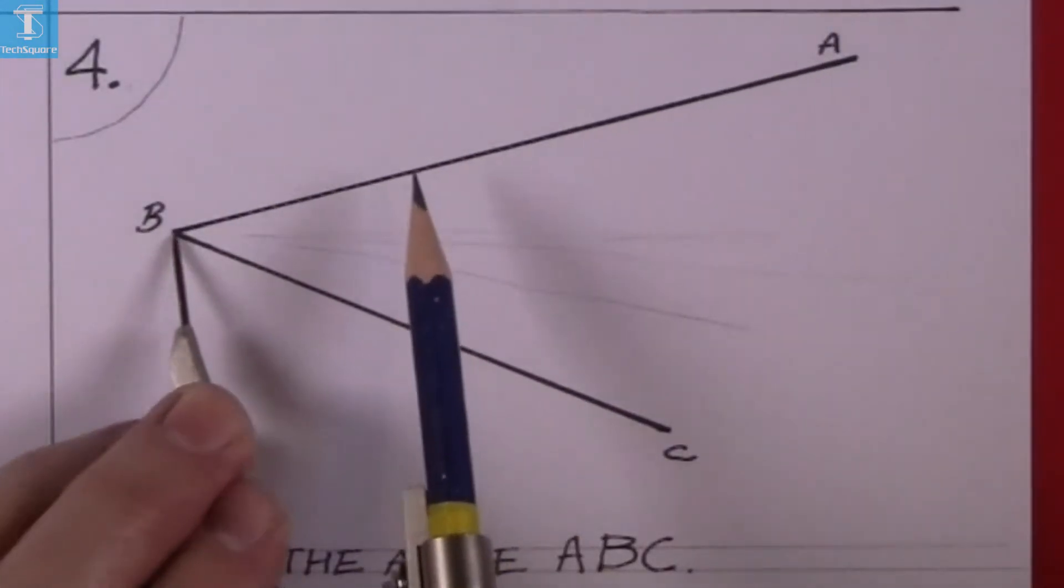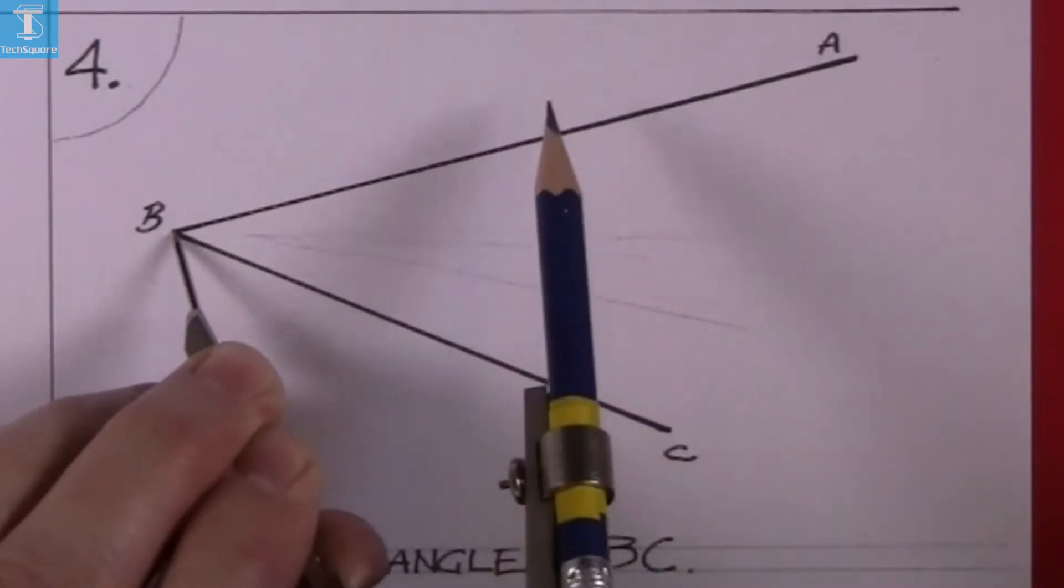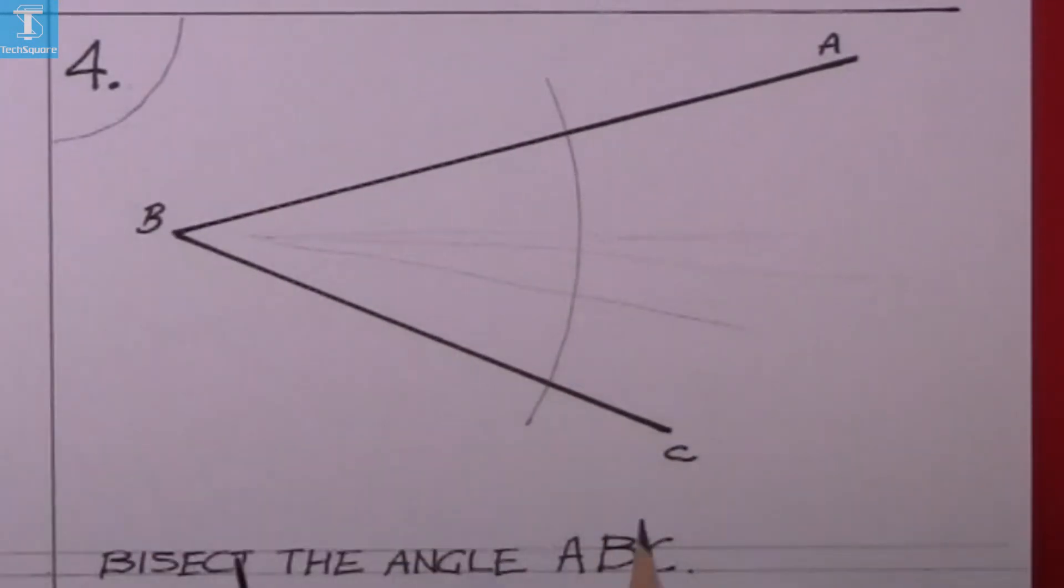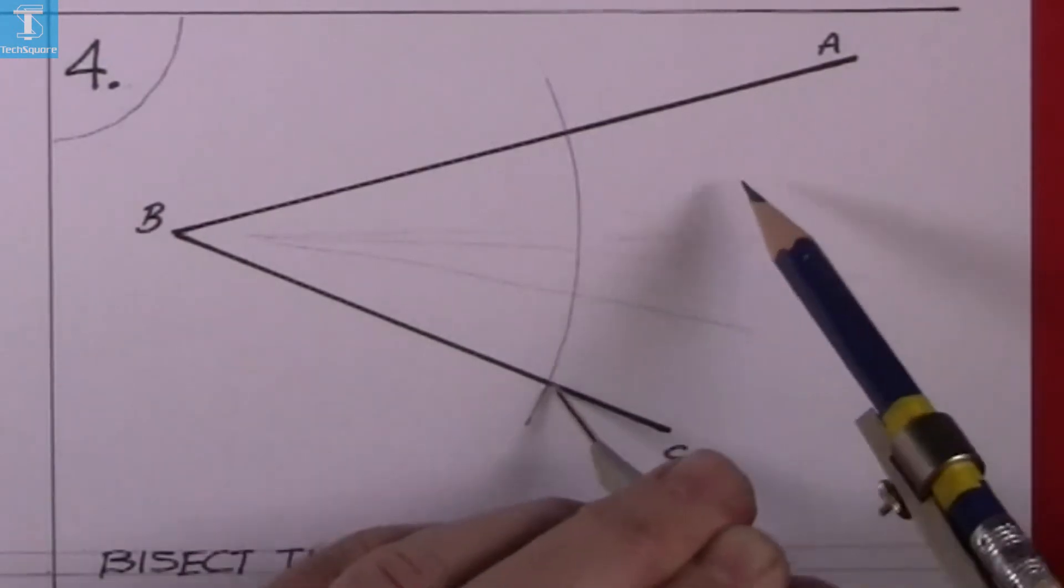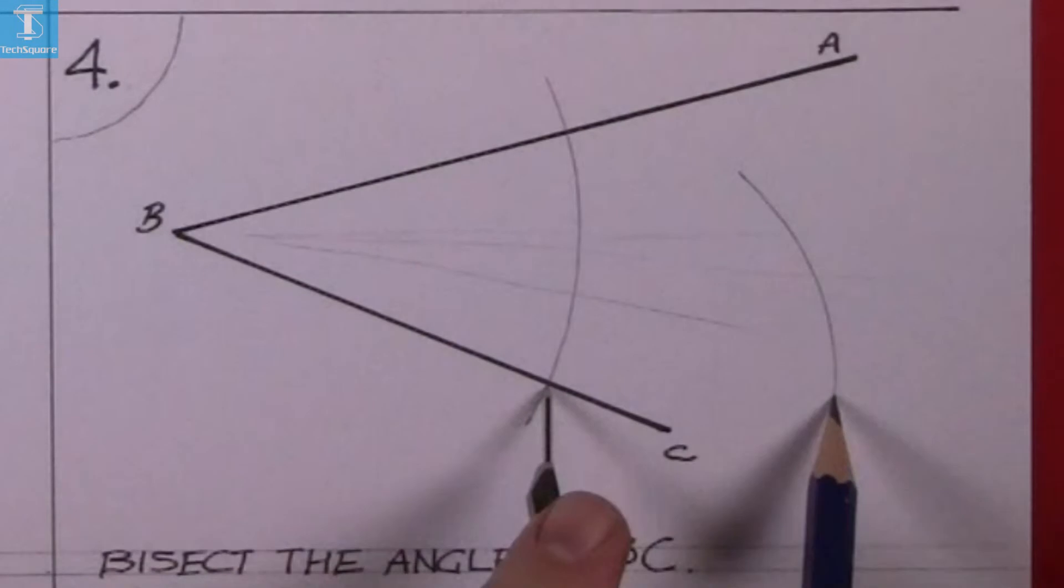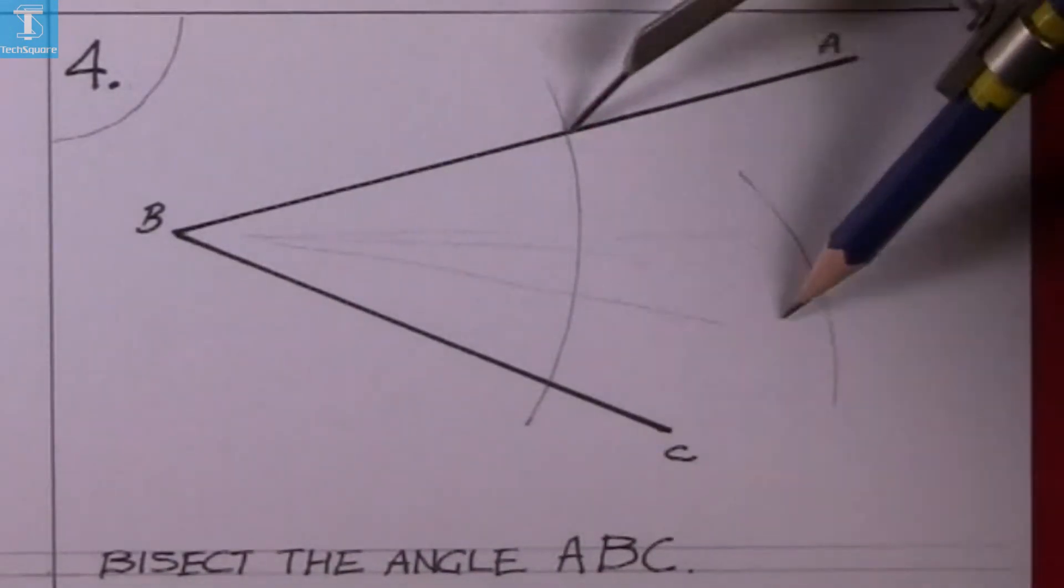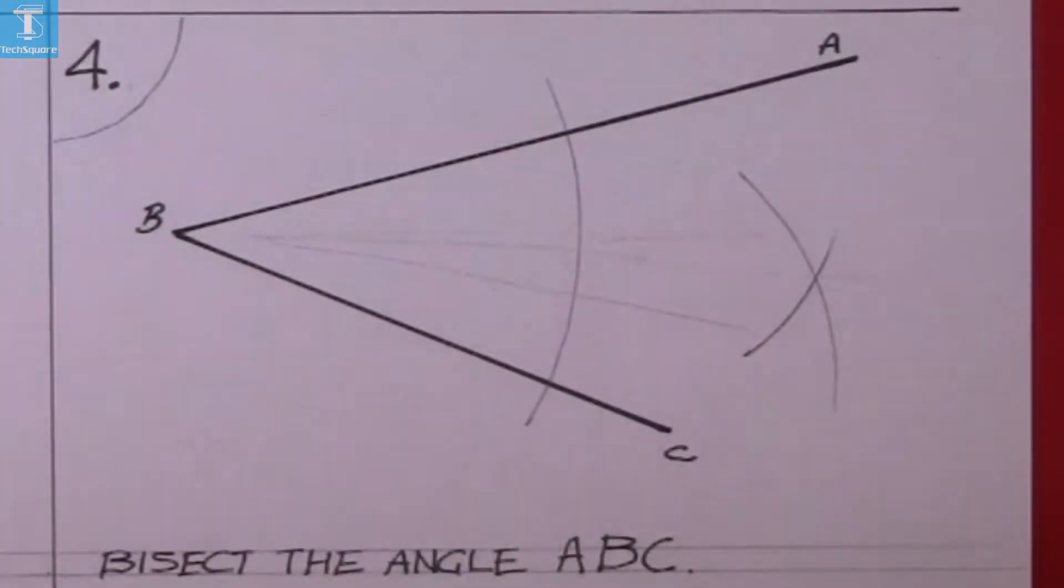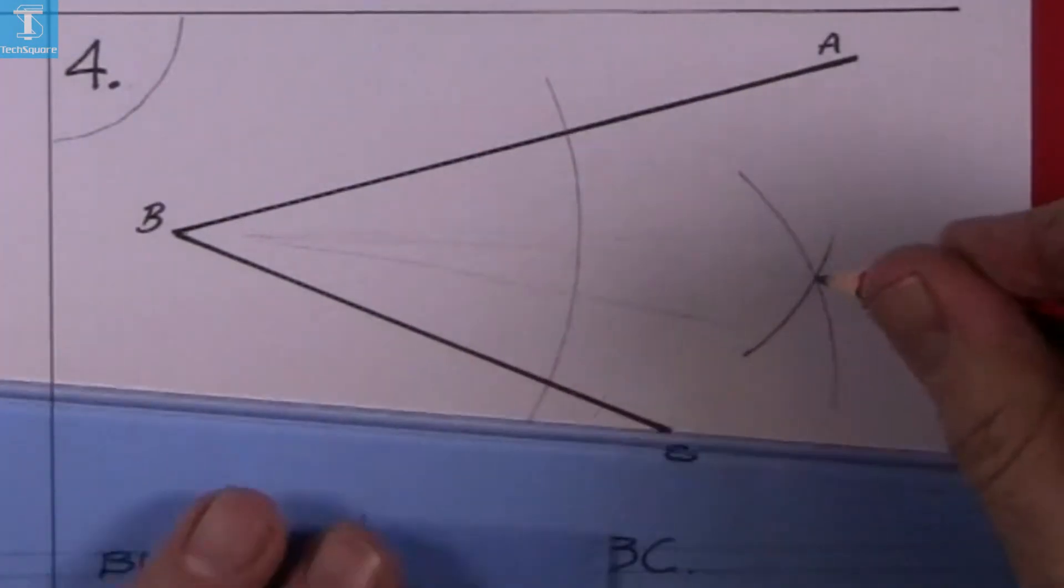So put the point of compass in B here or the vertex. Draw an arc. Put the point of compass where the arc cuts the line, and draw another arc here and the same from the other side. And where those two arcs cross each other, join that point back to vertex B.